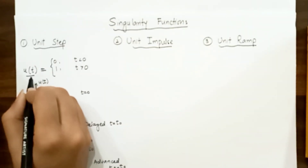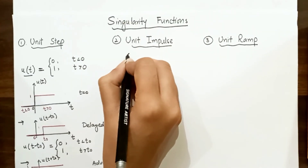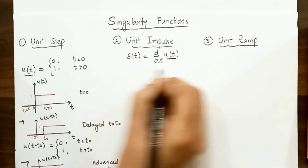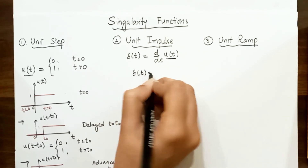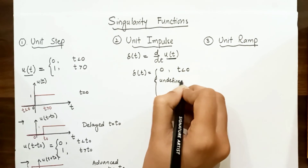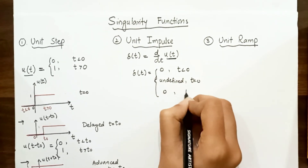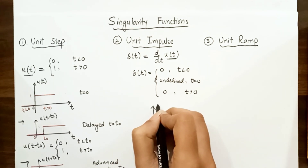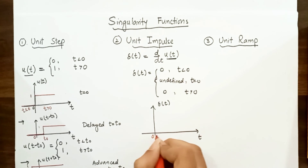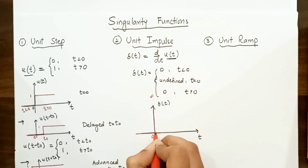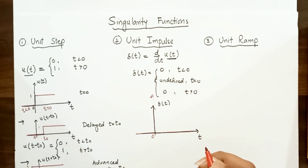The second singularity function is the unit impulse function. If we take the derivative of the unit step function u(t), we get the unit impulse function, denoted by δ(t). It equals 0 for t less than 0, is undefined (goes to infinity) at t equals 0, and equals 0 again for t greater than 0. Drawing it in the xy plane, the impulse shoots to infinity at t equals 0 and is zero elsewhere.